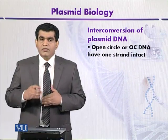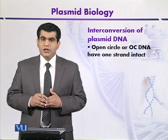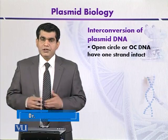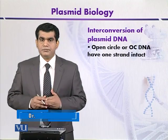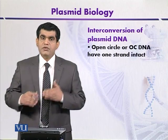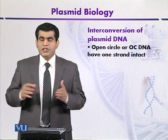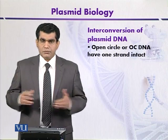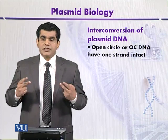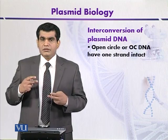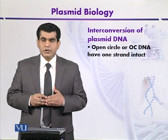If one strand is intact and the other has a gap, then the plasmid is called open circle DNA, or OC DNA. Supercoiled means that the double helix structure of the DNA again coils itself — that is, it forms a coil on top of the helix — and this is called supercoiling.